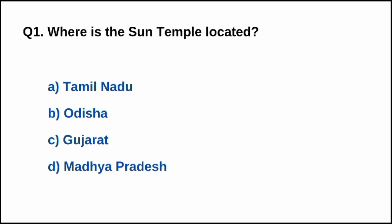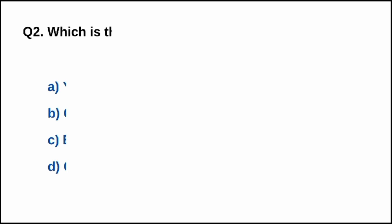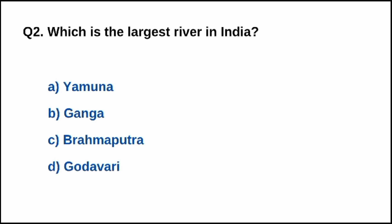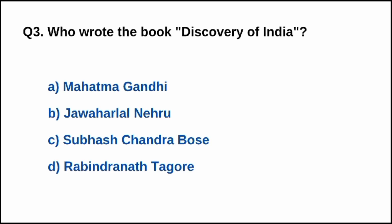Question number one: Where is the Sun Temple located? The correct option is B, Odisha. Question number two: Which is the largest river in India? The right option is B, Ganga.